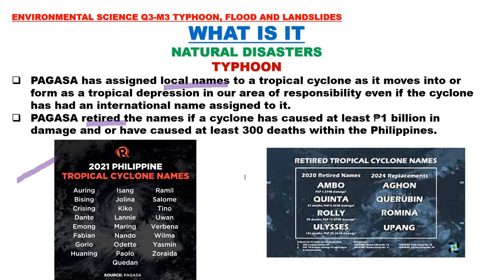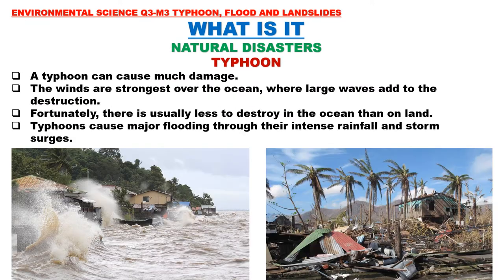Here are examples of retired tropical cyclone names — retired because they caused severe damage and took many lives in the Philippines: Ambo, Quinta, Rolly, and Ulysses, which was the most recent. Their replacements for 2024 are Aghon, Cherubin, Romina, and Upang.